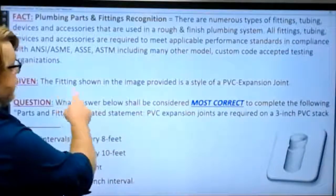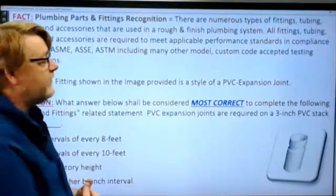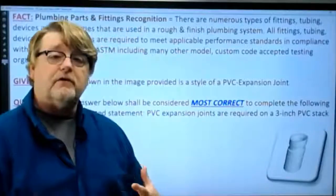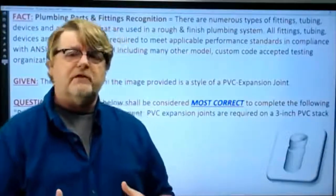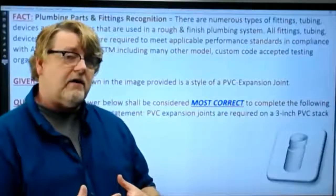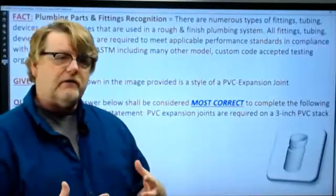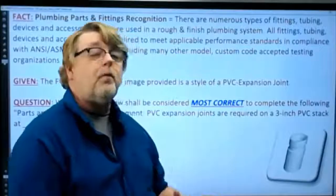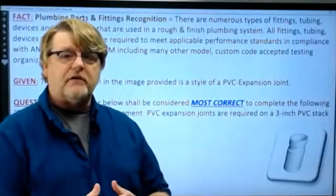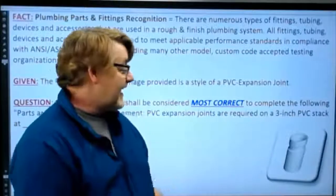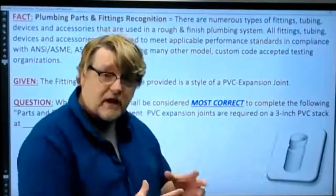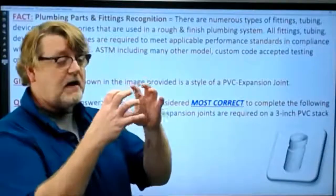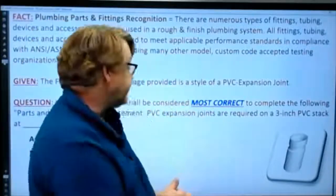The given part is the fitting shown in the image provided is a style of PVC expansion joint. Down in the corner, on any of our tests, we try to show an image in reference to the question being asked to give you an idea of what we're looking for. This is just one of a series of manufacturers that manufacture expansion joints. They have slightly different designs, but what they do is they ride upon o-rings or some type of seal inside so that the pipe expands and contracts.